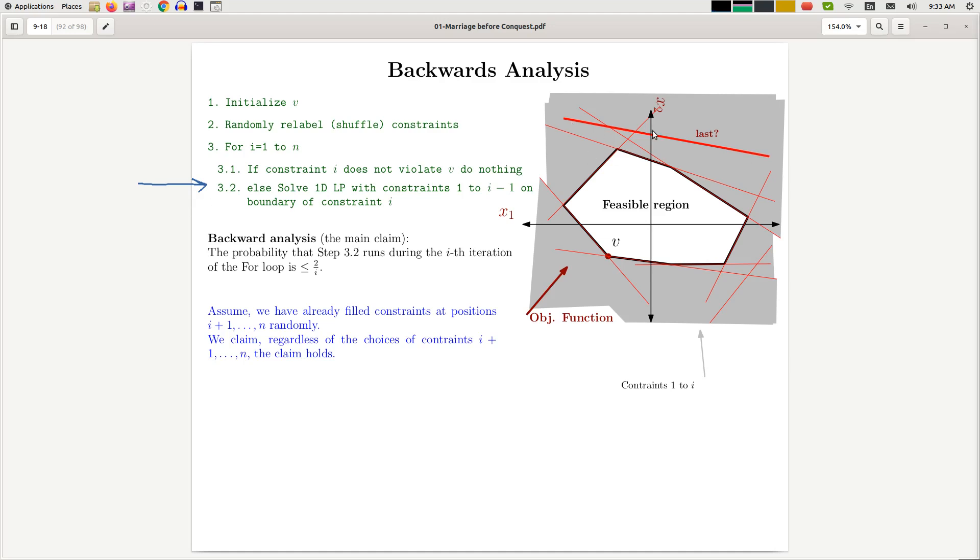No, because if this is the choice of constraint number i, this constraint does not violate v, so therefore we are at step 3.1. Similarly, if this was the last constraint, that means that if I look at constraint 1 up to i-1, the feasible region looked like this, and then I added this, you know, cut off that piece of the feasible region. Again, I don't care, because both that constraint still satisfies v. So I'm still at step 3.1.